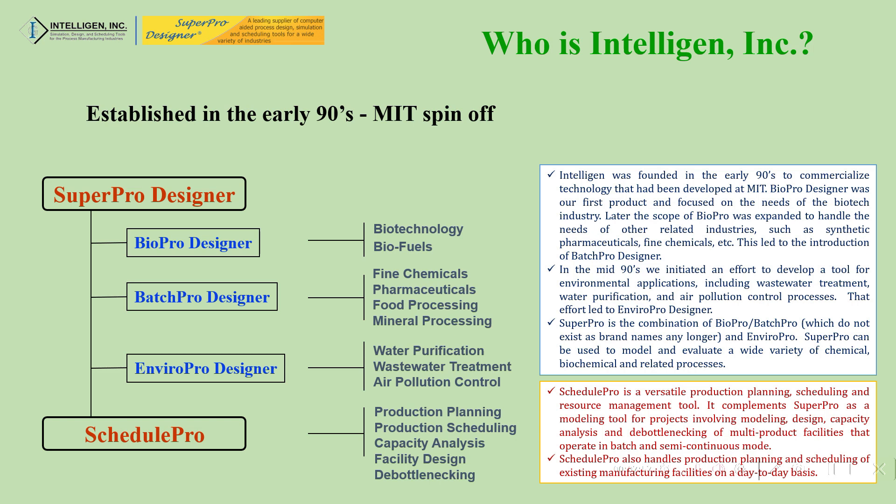The current version is version 13, and in upcoming videos I will show you how to download the trial version and explore its features. Intelligen also supplies another product called SchedulePro, which is used for production planning, production scheduling, capacity analysis, facility design, and bottleneck identification.